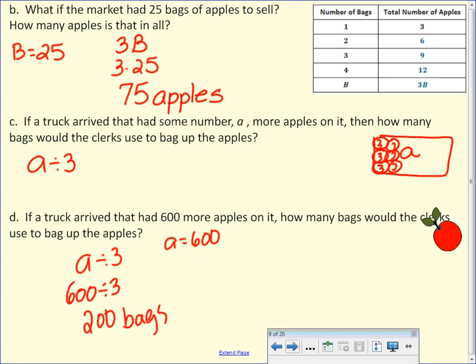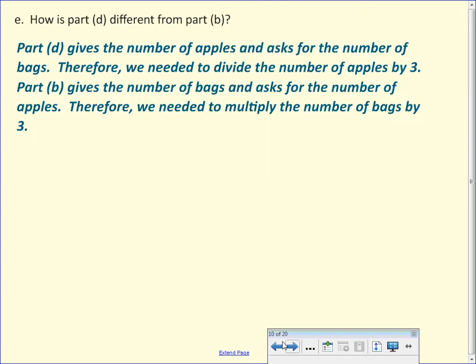So in B, I had the bag. I had to find the apples. Now in example C, excuse me, I had the apples. I had to find the bag. Expression, replace, and solve. Just like area, volume, right? Write the formula, replace the letter with the number, and solve. So part D, how are they different? Part D gives the number of apples and asks for the number of bags. Therefore, we need to divide the number of apples by three. Part B gave us the number of bags and asks for the number of apples. Therefore, we needed to multiply the number of bags by three.